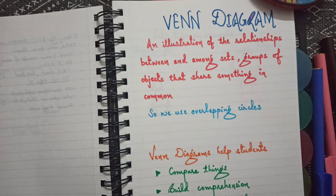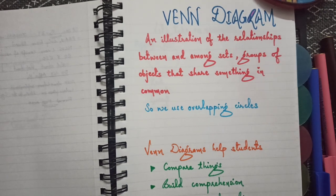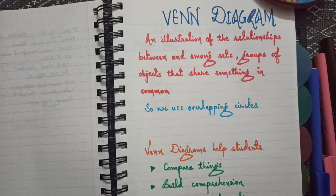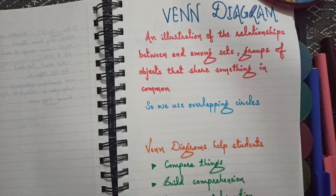Let us understand what is Venn diagram. It is an illustration of the relationships between and among sets, groups of objects that share something in common. It means we have to compare two things and make a diagram showing what are the similarities and what are the dissimilarities.